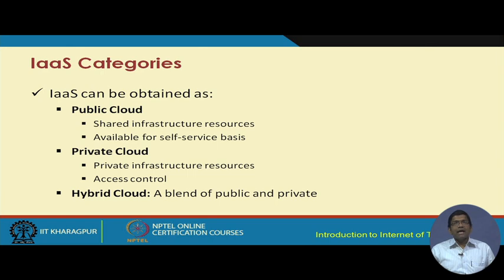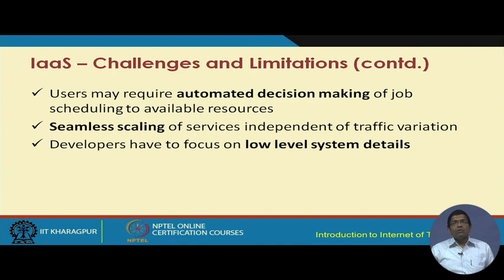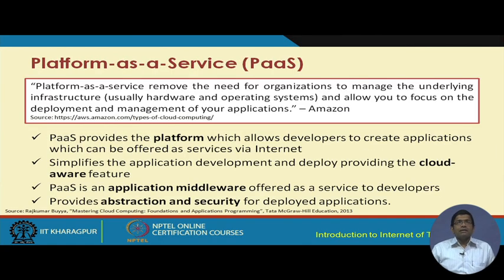IaaS can be obtained as a public cloud, private cloud, or hybrid cloud, as discussed in the fundamentals lecture on cloud computing for IoT. Challenges and limitations of IaaS include that regulatory approval is sometimes required for the use of outsourced storage and processing. Network latency may degrade expected performance. Users may require automated decision making for job scheduling and seamless scaling of services independent of traffic variation, and developers have to focus on low-level system details.